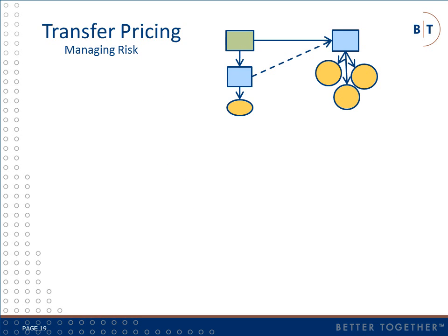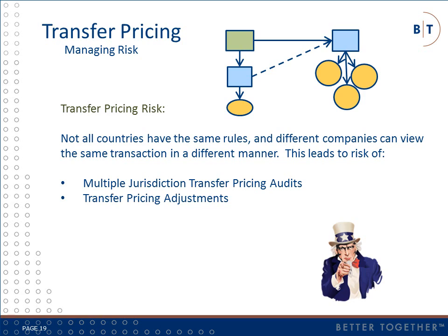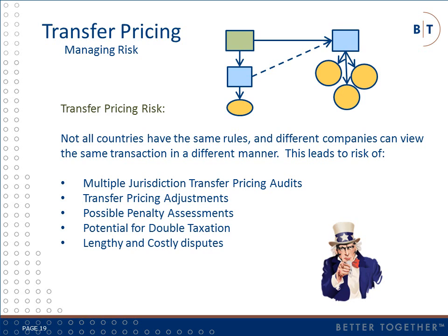In our simple example, transfer pricing does not appear to be too complex or controversial. This can change quickly as the number of countries involved and the complexity of the transactions increases. While most countries follow the arm's length principle and employ similar methods, different countries are not always going to view the same transactions through the same set of eyes. This leads to risks of transfer pricing audits across multiple jurisdictions, transfer pricing adjustments, penalty assessments, double taxation, and lengthy and costly disputes.